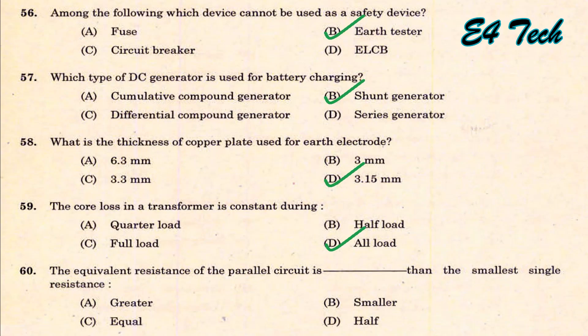The equivalent resistance of a parallel circuit is lower than the smallest single resistance. The equivalent resistance in a parallel circuit is option B.